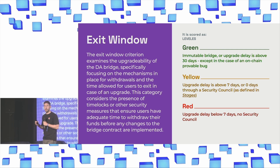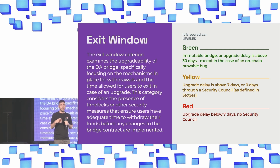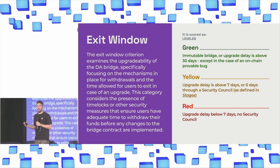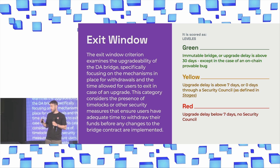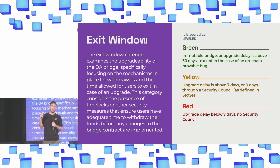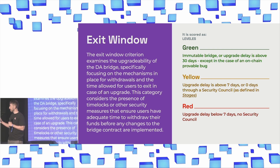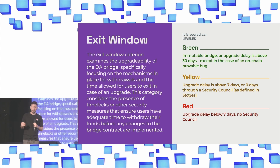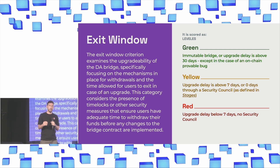The fourth category is the exit window, which examines the possibility for users to exit the system in case of an unwanted upgrade. This follows the criteria set in the stages framework for L2s: green for an immutable bridge or an upgrade delay of 30 days or more; yellow for above seven days, which can be brought to zero if a security council is in place as defined in the stages framework; and red if the upgrade delay is below seven days and there is no security council.